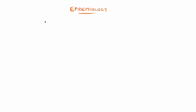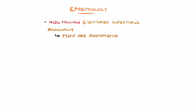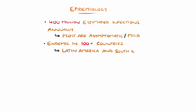Up to 400 million infections are estimated to happen each year, although most are mild or asymptomatic, with the virus being endemic in over 100 countries worldwide, particularly in Latin America and Southeast Asia. Although not endemic in the United States or UK, there have been several thousand cases reported.